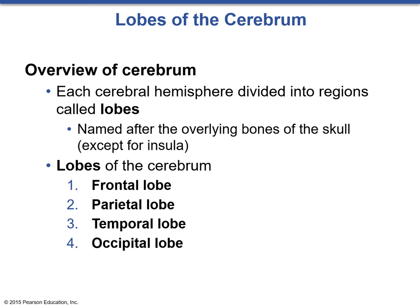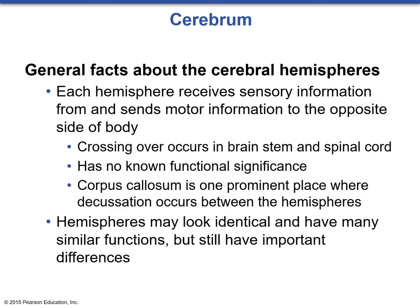The lobes of the cerebrum are named for their overlying bones of the skull: frontal, parietal, temporal, and occipital. Each hemisphere receives sensory information from the opposite side of the body and sends motor information to it — the left side of the brain feels and controls the right side of the body, and vice versa. This is a form of decussation, or crossing over, which occurs in the brainstem and spinal cord. It has no known functional significance. The corpus callosum is one prominent place where decussation occurs between the hemispheres.